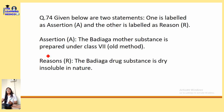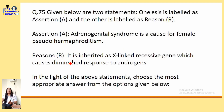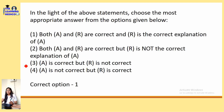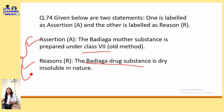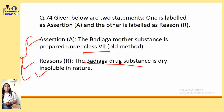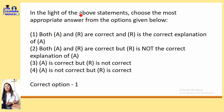Assertion and reason: The Badiaga mother substance is prepared under class 4 — this is correct. The Badiaga drug substance is dry and insoluble in nature — this is also correct. So both assertion and reason are correct. However, some drug classifications are difficult to remember, such as which class Belladonna belongs to, so it's acceptable not to get all such questions right.